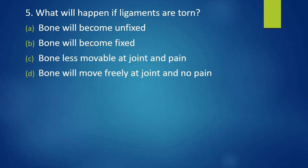Question 5. What will happen if ligaments are torn? Bone will become unfixed, bone will become fixed, bone less movable at joint and pains, or bone will move freely at joint and there will be no pain. What will happen if the ligaments are torn? Correct answer is option C. Bone will be less movable at the joint and there will be pain.